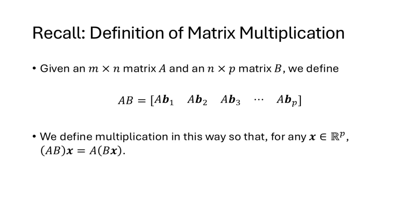Recall our definition of matrix multiplication from the previous lecture. When we have an m by n matrix A and an n by p matrix B, we can multiply A times B, and the result is the matrix whose columns are the result of multiplying A by each individual column of B. We define it this way so that we get the identity that AB times any vector x equals A times the vector Bx.